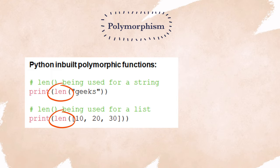This function can be used for a string, counting the number of characters in a string, or it can also be used for a list. In this case, it will count the number of elements in the list instead. This is an example of a function that does different things depending on the type of argument that is passed to it.